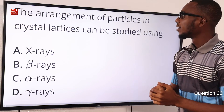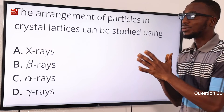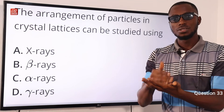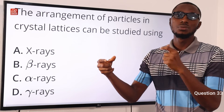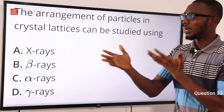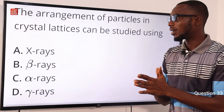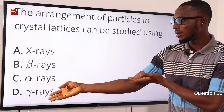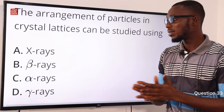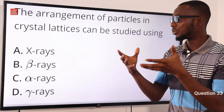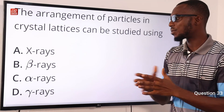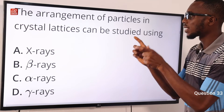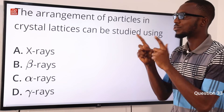Question 33. The arrangement of particles in crystal lattices can be studied using what? We are talking about crystallography. What they use is X-rays. X-rays have small wavelengths compared to the wavelength of light, and they have higher energy compared to light rays, so they are able to penetrate matter and you can then assess the structure of such crystals. Beta-rays and gamma-rays: gamma-rays are used to sterilize equipment, and beta-rays and gamma-rays are used to check the thickness of certain sheet materials. Going back to the question — crystallography can be studied using X-rays. Option A.